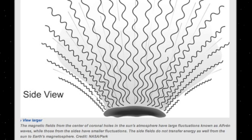Coming out of the centers of coronal holes are Alfvén waves, which NASA believes transfer extra energy to the Earth compared to the surrounding areas.